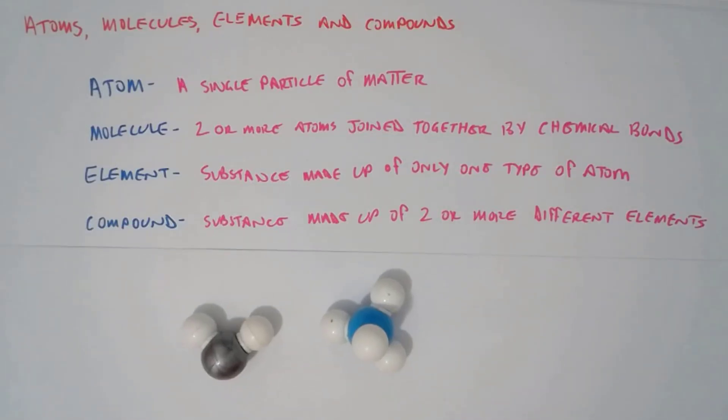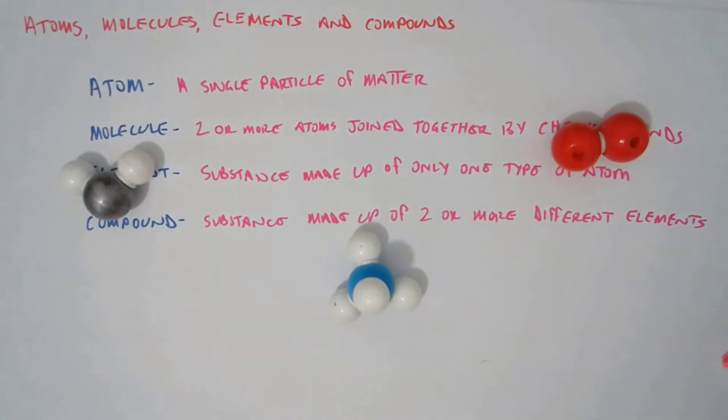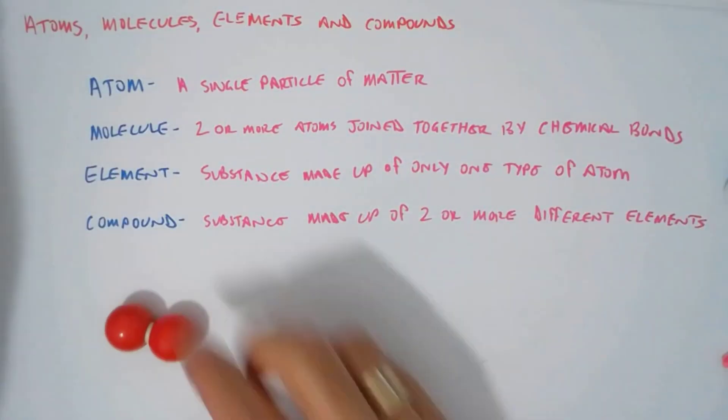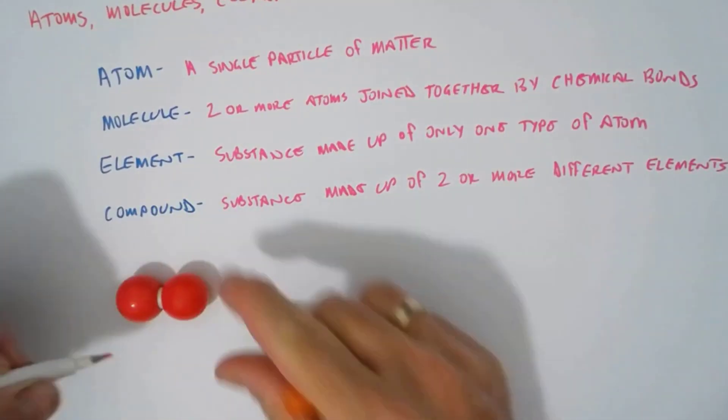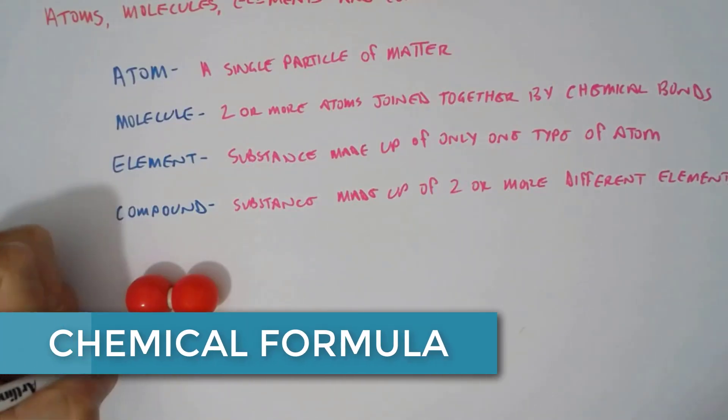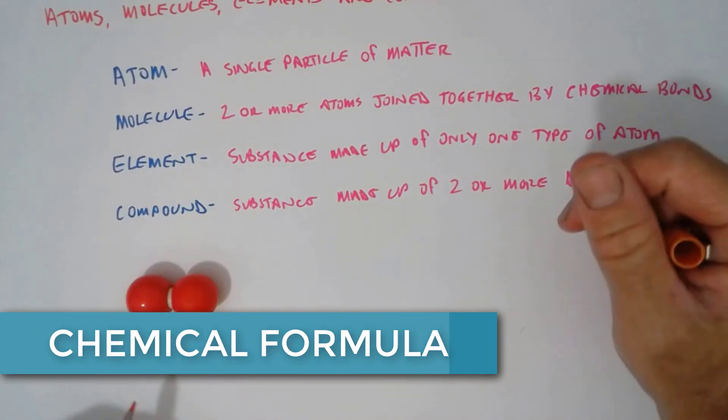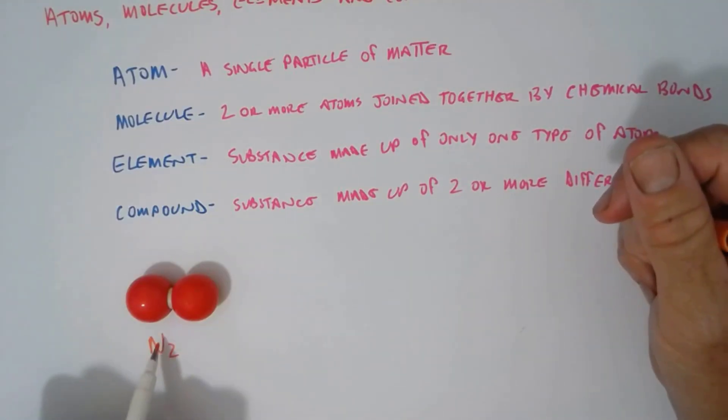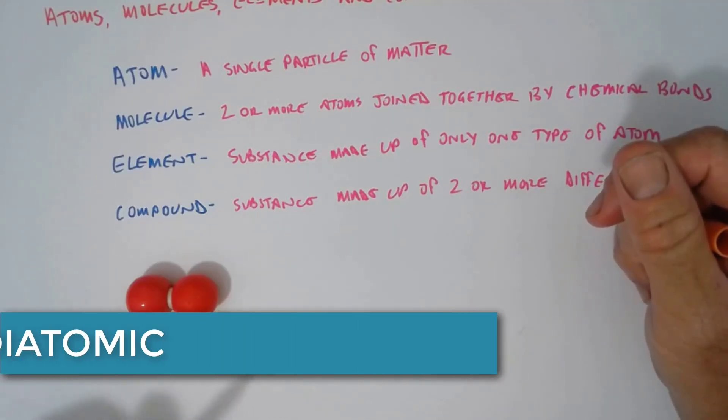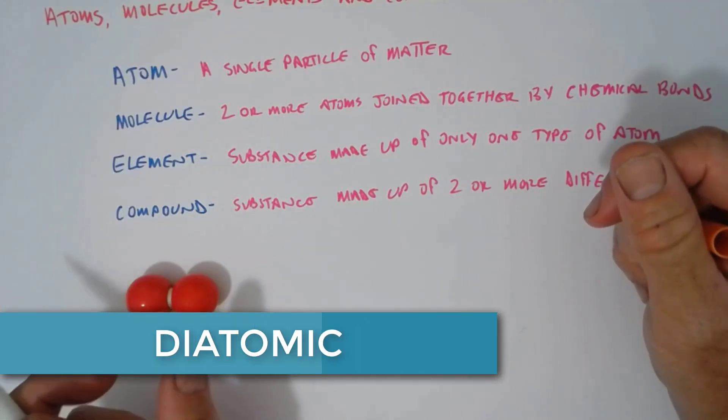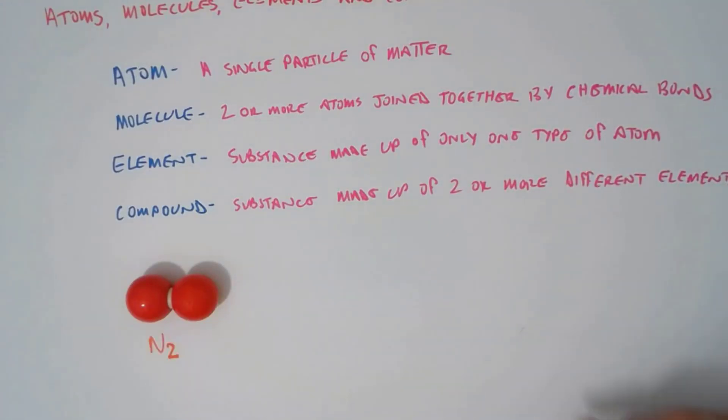Let's have a look at these examples then. This is nitrogen, it's N2. When we write chemical formula we write the symbol for the element and this subscript number relates to the number of atoms in the molecule. This is a molecule of nitrogen. Nitrogen gas is diatomic, that means there's two atoms together.